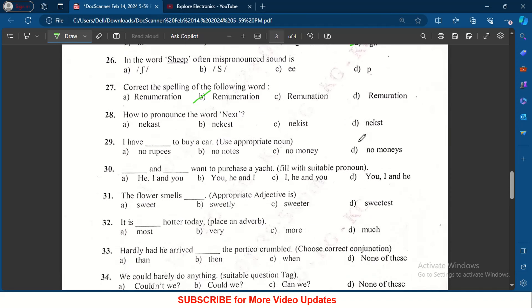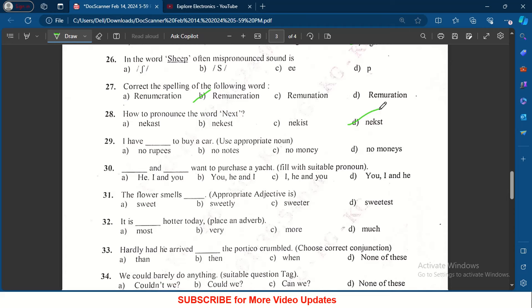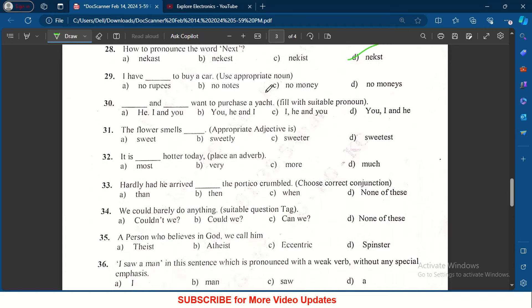I have dash to buy a car. Use appropriate noun: no rupees, no notes, no money to buy a car. Dash and dash want to purchase he asked: he I and you, you he and I, I he and you. I he and you is the right answer.